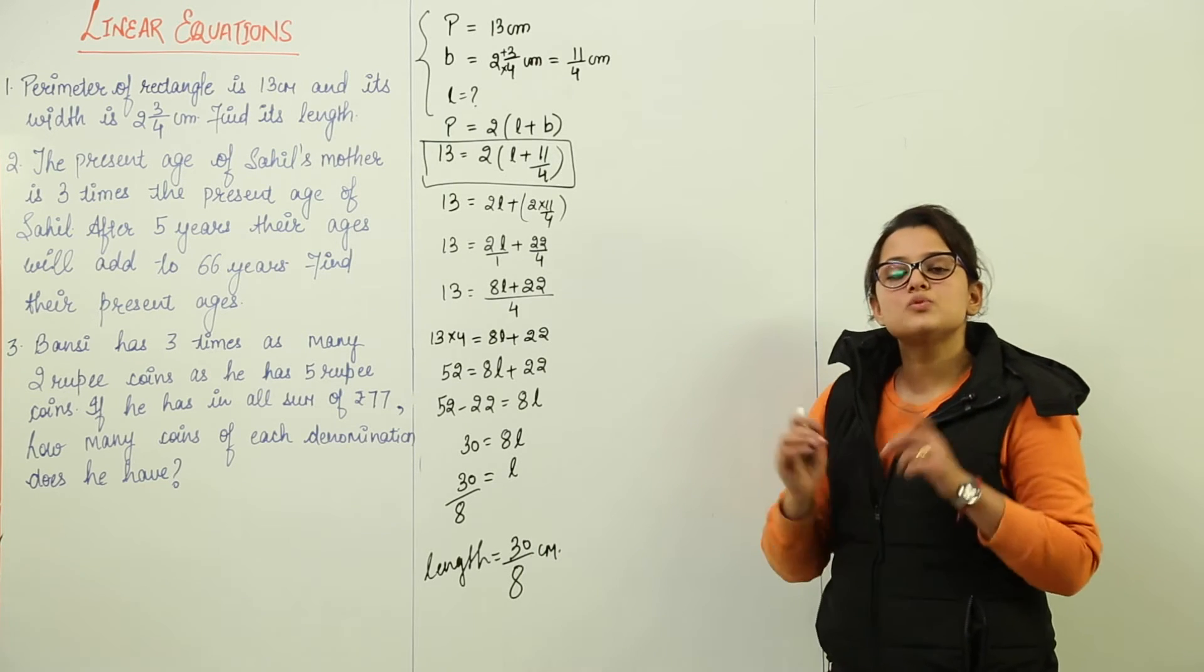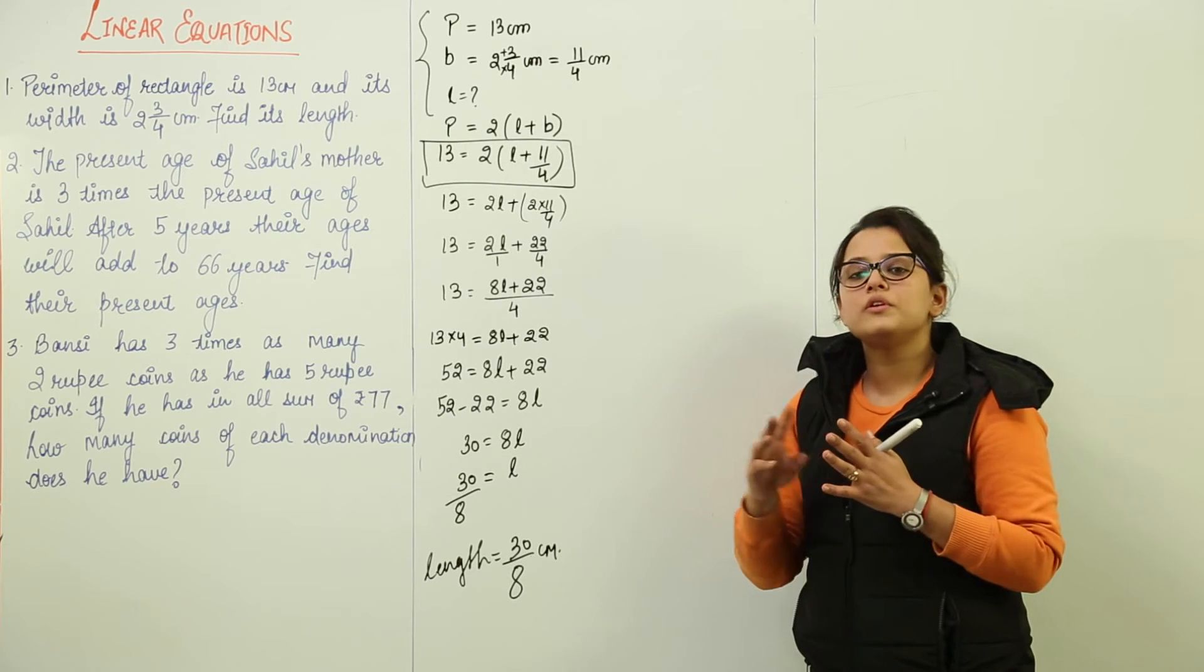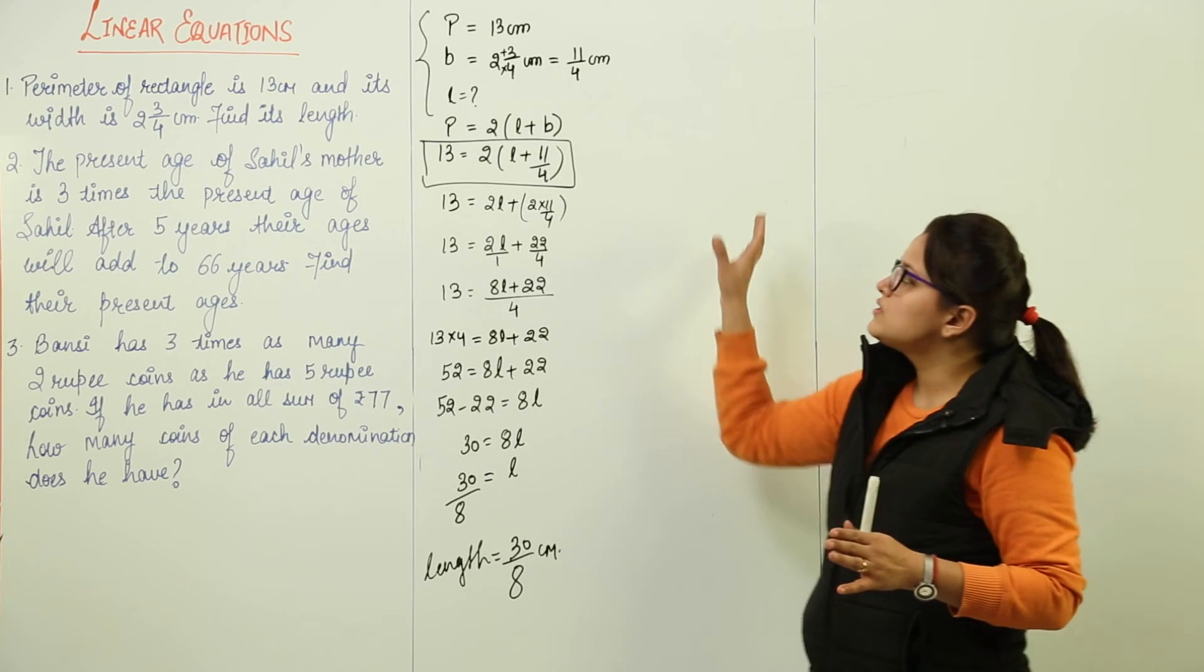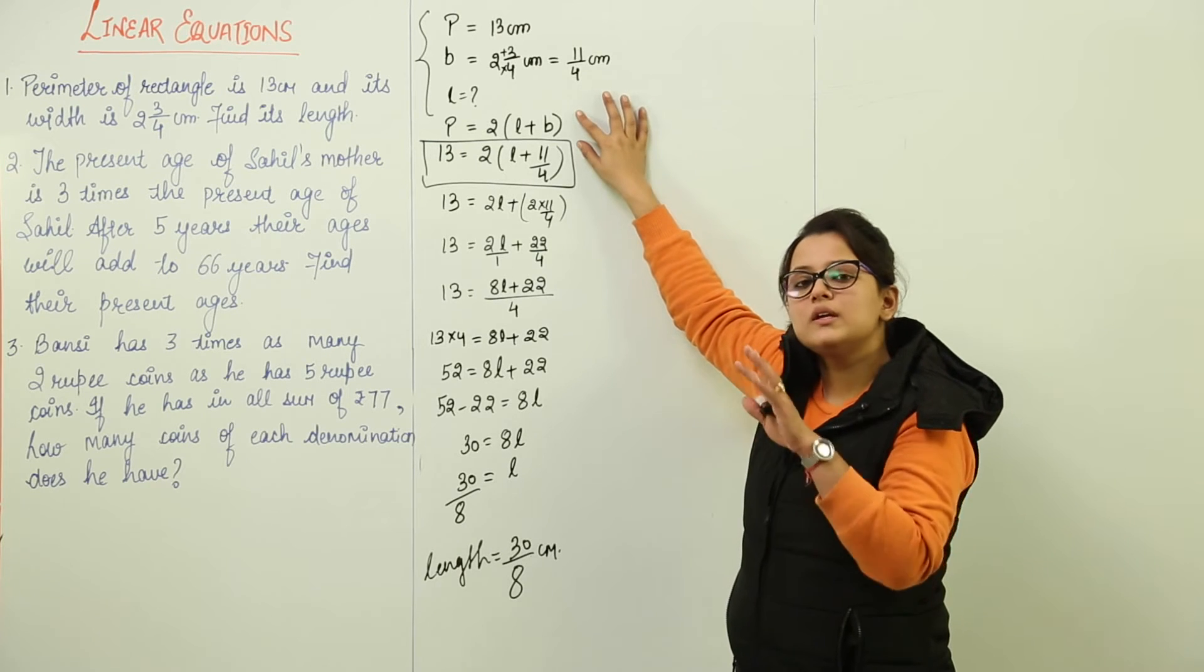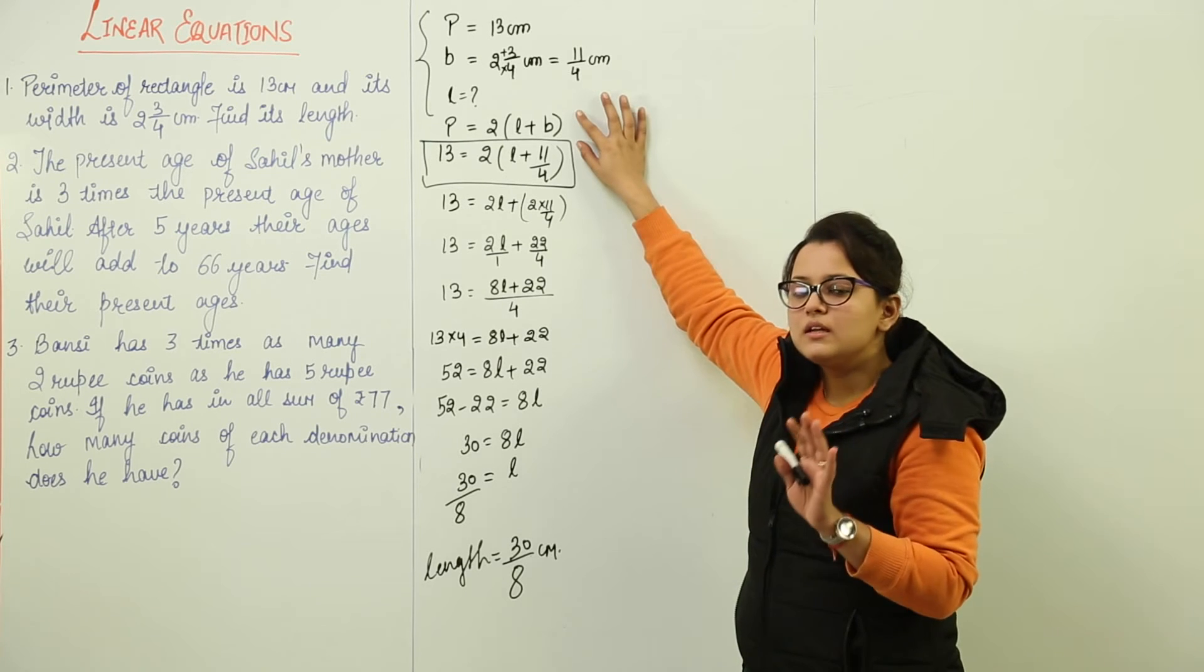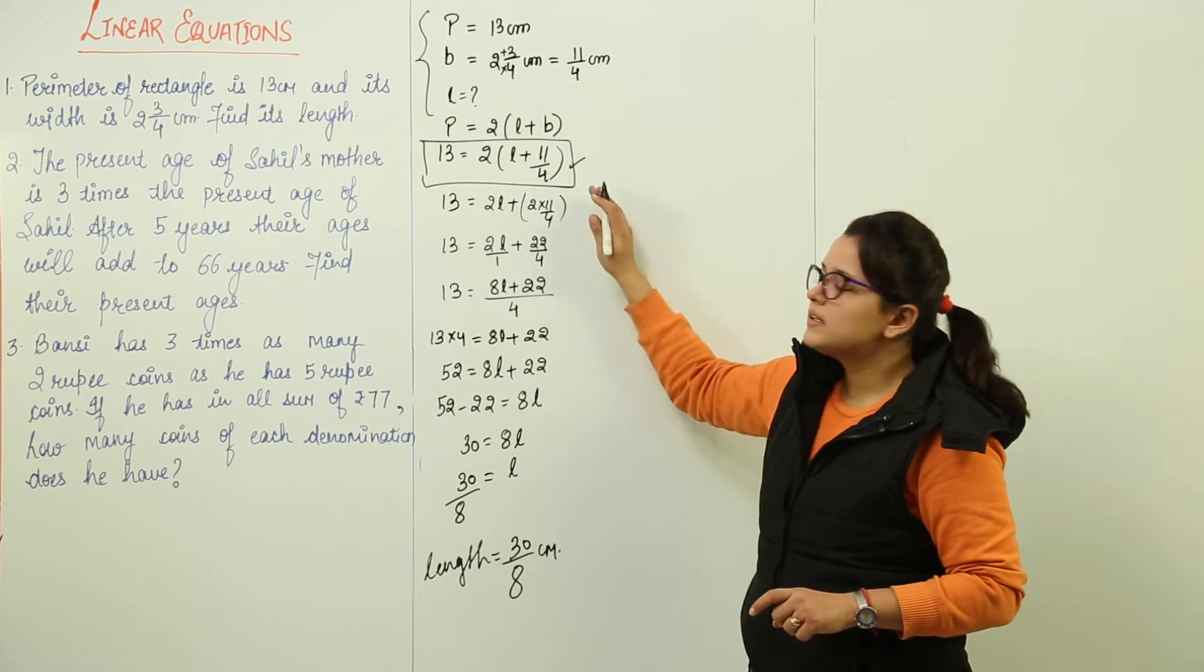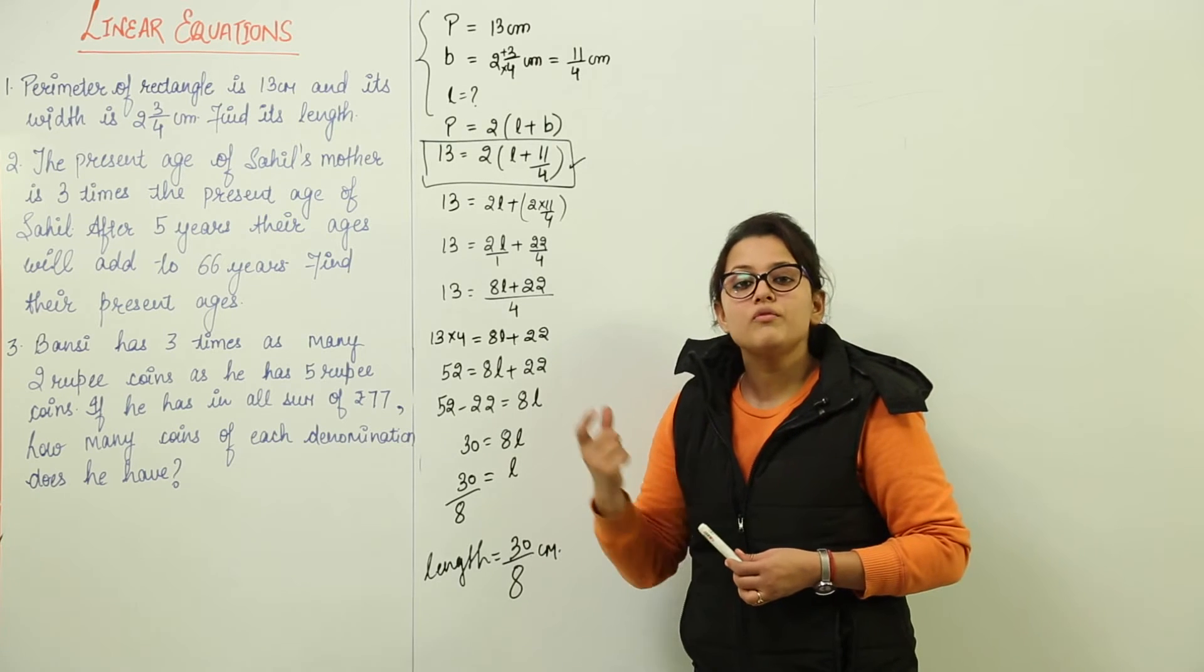So this is one type of question in which you are given 3 or 4 quantities and one quantity out of them is unknown. So all you have to do is just write the basic formula, put all the values, put the given values, the unknown value will remain as it is, rest all the values will be put. And then simple solving of the linear equation will give you the value of unknown quantity.